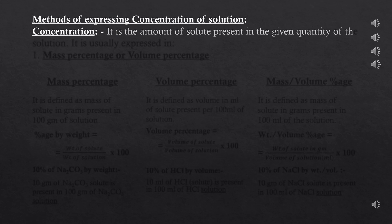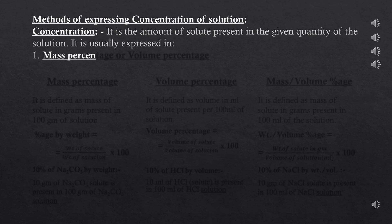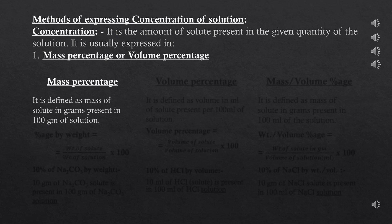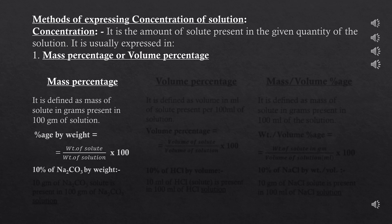Concentration is usually expressed in different ways. First is mass percentage or weight percentage. It is defined as the mass of solute in grams present in 100 grams of solution. Percentage by weight = (weight of solute / weight of solution) × 100. For example, a 10% solution of sodium carbonate by weight means 10 grams of sodium carbonate is present in 100 grams of solution.